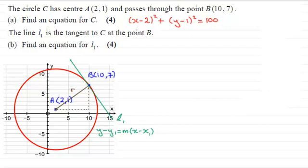So, let's start off then by working out the gradient of the line AB. To get the gradient then between two points, it's the difference in the y-coordinates divided by the difference in the x-coordinates. So, it's going to be 7 minus 1, divided by the difference in the x-coordinates, which will be 10 minus 2.